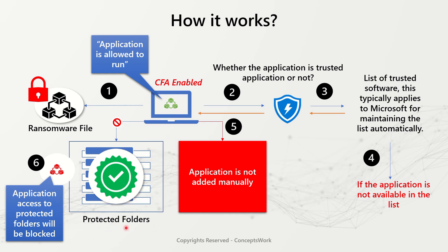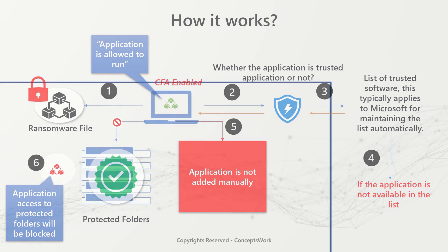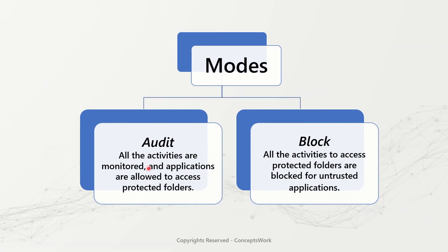This is how controlled folder access works for all untrusted applications or malware. Controlled folder access can be enabled in two different modes: audit mode and block mode. In audit mode, all activities are monitored and applications are allowed to access protected folders, with events generated in Event Viewer. In block mode, everything is monitored but access to protected folders is blocked for all untrusted applications — which is the experience described throughout this video.